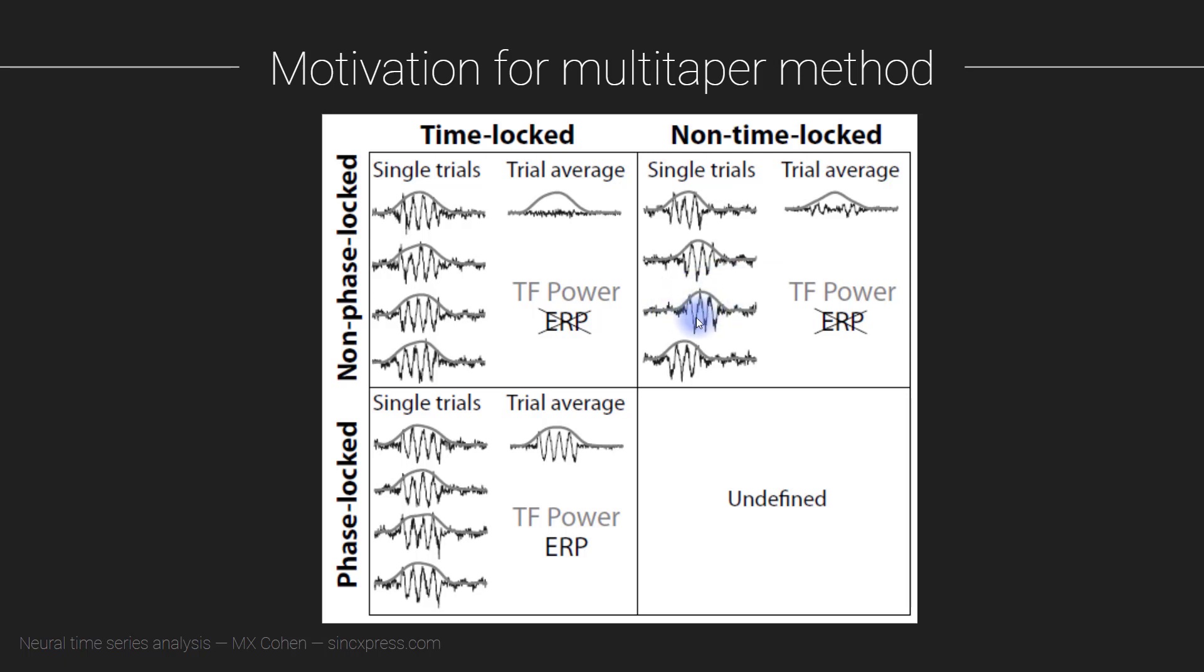Now if these features of the data, these non-phase-locked, non-time-locked features of the data are really strongly non-time-locked, then they can be lost in the trial averaging.